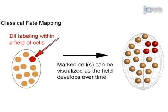Fate maps are generated by marking and tracking cells in vivo to determine how progenitors contribute to specific structures and cell types in developing and adult tissue.